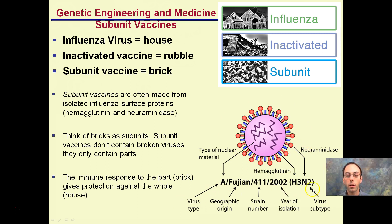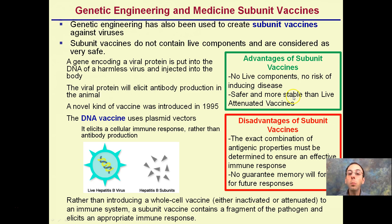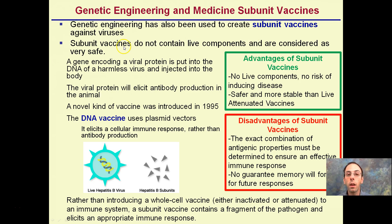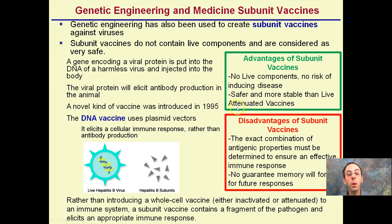This gives an idea of how viruses are labeled — they can be pretty complex. The subunit vaccine has advantages and disadvantages. Genetic engineering has allowed us to create these subunit vaccines, and they don't contain any live components, making them considered very safe. There's no risk of introducing disease. If you tried to heat-kill a virus and didn't do it all the way, you could be infecting the individual. Subunit vaccines are safer and more stable than live attenuated vaccines.